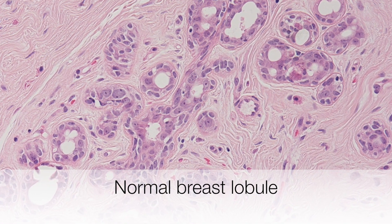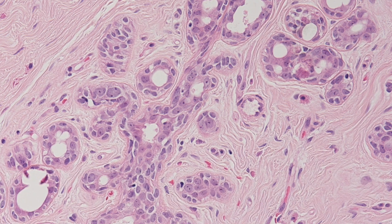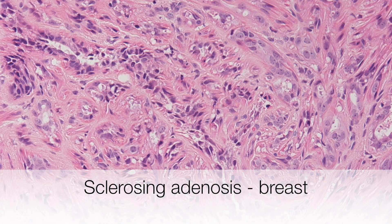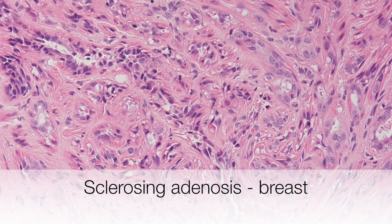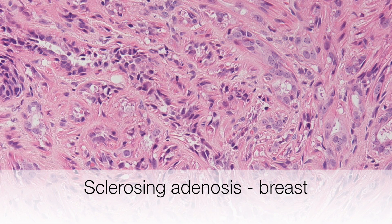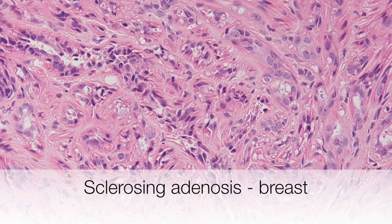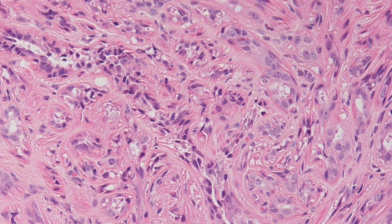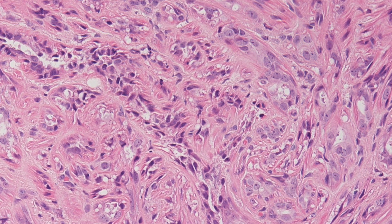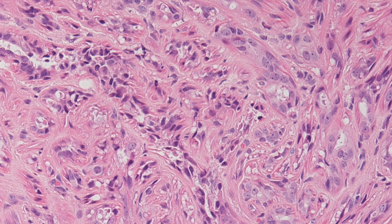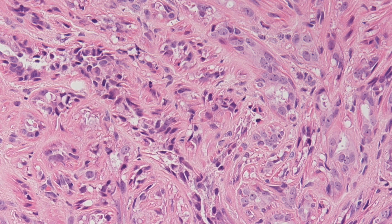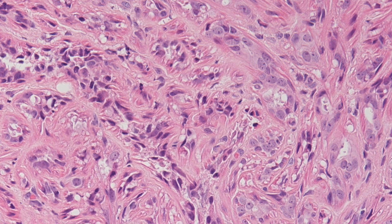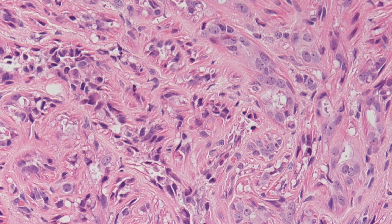Here is a normal breast lobule. And here there is sclerosis of the lobules — this condition is called sclerosing adenosis. This is a type of harmless sclerosis where the only damage that can really occur is if the pathologist misdiagnoses the sclerosing process as cancer, resulting in unnecessary radical treatment.